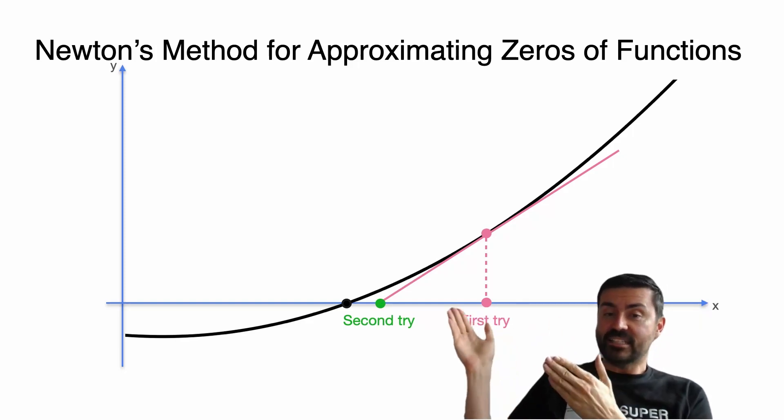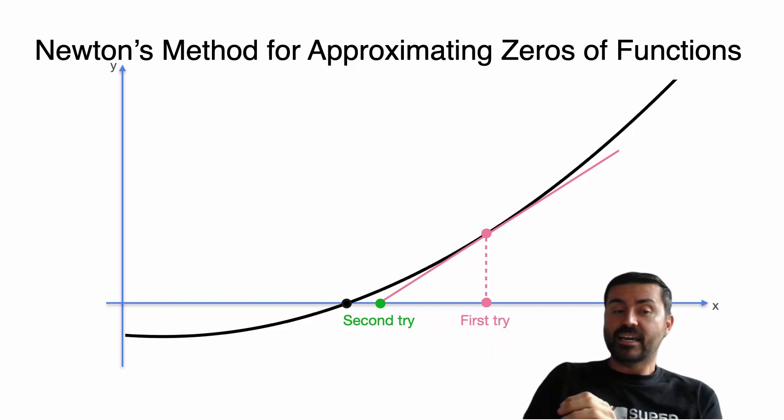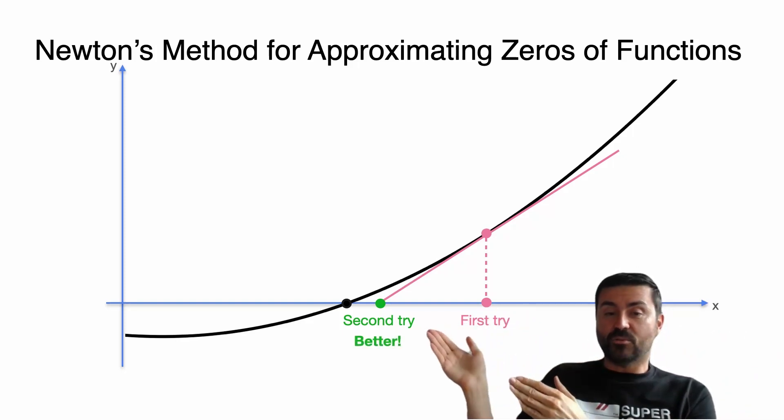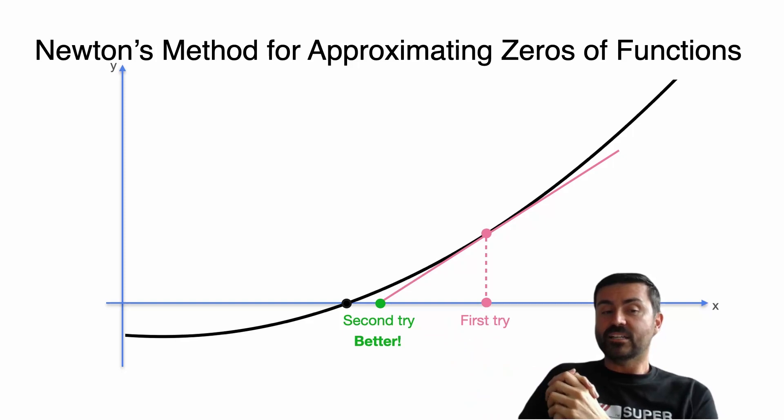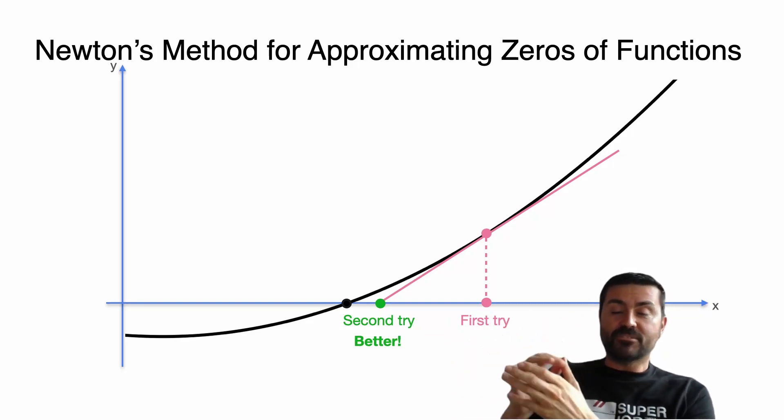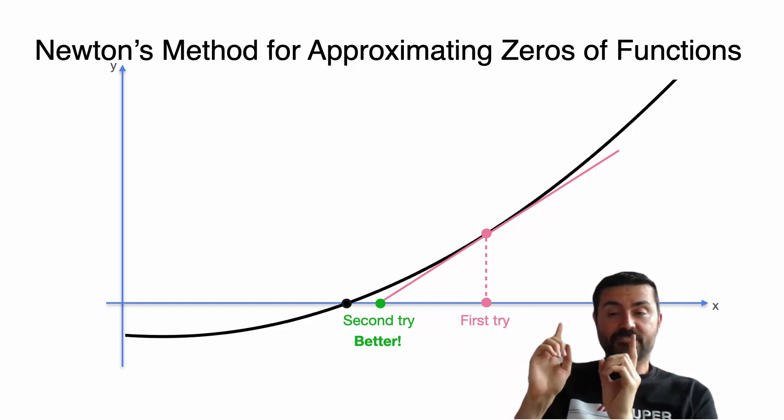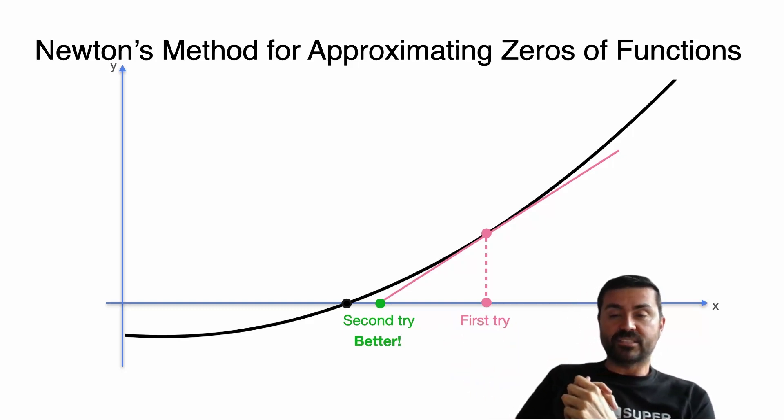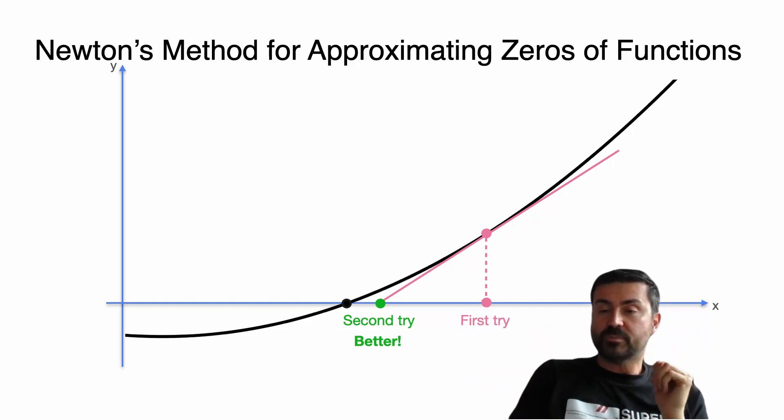As you can see, the second try is much closer to the zero than the first try, and Newton's method says this always happens. The second try is always better than the first try. So all we need to do is do this several times. It's actually very good at converging. In a few tries you get really close to that zero, and that's all we need. That's what Newton's method says.